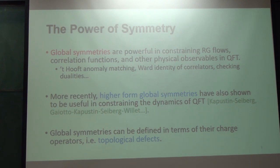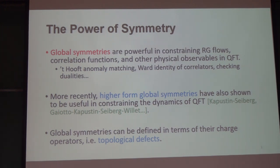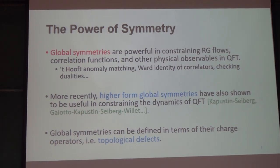Symmetry has always been a guiding principle in theoretical physics. As we learned from day one in field theory, global symmetry is very powerful in constraining renormalization group flows, correlation functions, and all other physical observables. This includes 't Hooft anomaly matching, which gives us a lot of information about the IR structure of the RG flow. More recently, this program has been generalized through higher-form global symmetry — symmetries that can be coupled to higher-form gauge fields — which have also proven very useful in constraining dynamics.